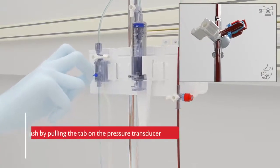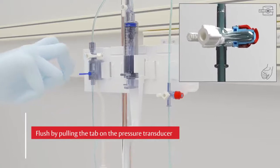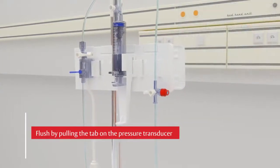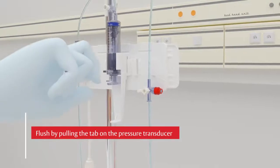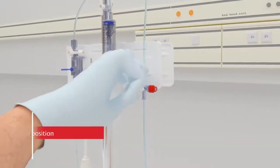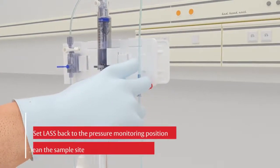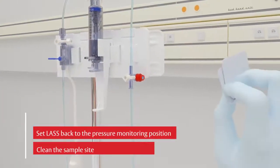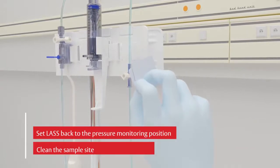Flush sample site and clear the line of residual blood by pulling the snap tab of the Edwards TruWave disposable pressure transducer. Then return the sampling site to the pressure monitoring position. Clean the sample site ensuring removal of any excess blood.